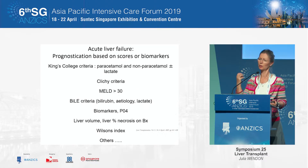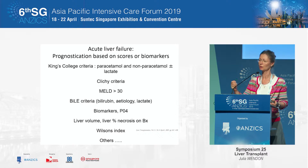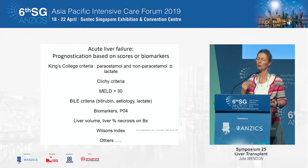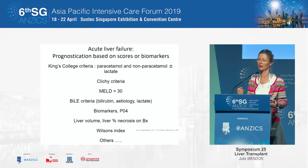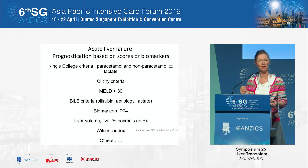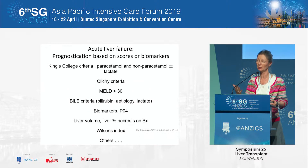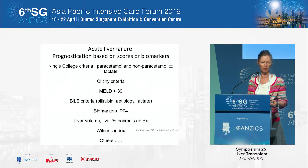Acute liver failure used to be a fairly clear-cut group. We had reasonable prognostic criteria to decide who to transplant, those patients got listed, and there was a fair chance of transplantation. What is clear now is that survival without transplantation is improving, and therefore our ability to make clear decisions about who to transplant is getting fuzzy. Complicating this further, liver support systems — specifically plasma exchange — confound all decision-making in terms of prognosis. This is getting more complex.